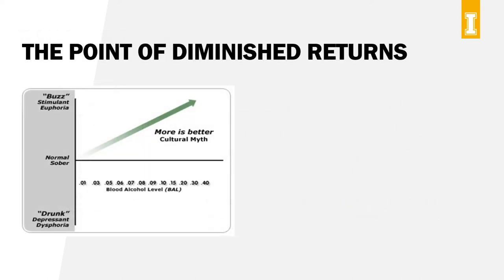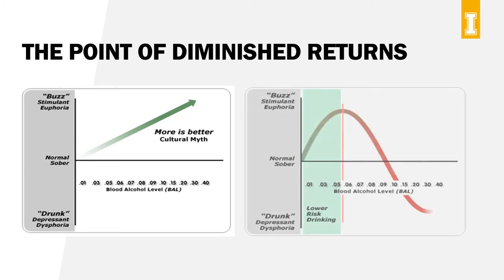Our brains get a lot of positive feedback when we drink alcohol. One drink often leads to feeling good, so logically two drinks makes us feel better, and so on. But more alcohol doesn't always equal more fun. There comes a point — and this can happen quite quickly — when things start going downhill and we start to experience not-so-good things like injuries, hangovers, regrets, and alcohol poisoning. We want to keep folks in the green zone, because the point of diminished returns starts around 0.05 BAC and above. Remember that alcohol is a depressant, meaning the more we drink, the more areas of the brain start slowing down or stop working altogether.